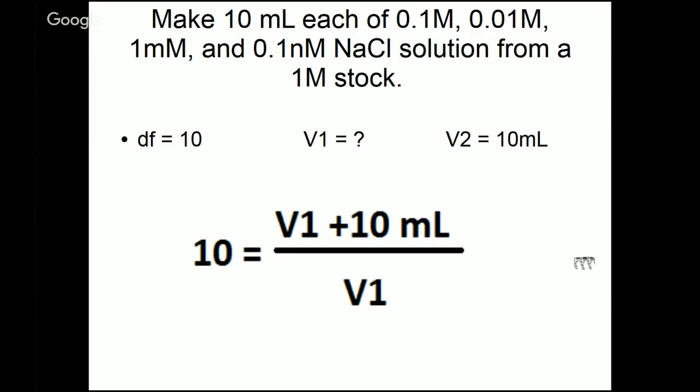All right, so let's apply this to our example problem. Here's the formula. We know that our dilution factor is 10. We don't know our V1. That's what we're solving for. But we do know our V2, and it's 10 mils, because that's our final volume we want to make. So we fill the numbers in, 10 equals V1 plus 10 mils, divided by V1.